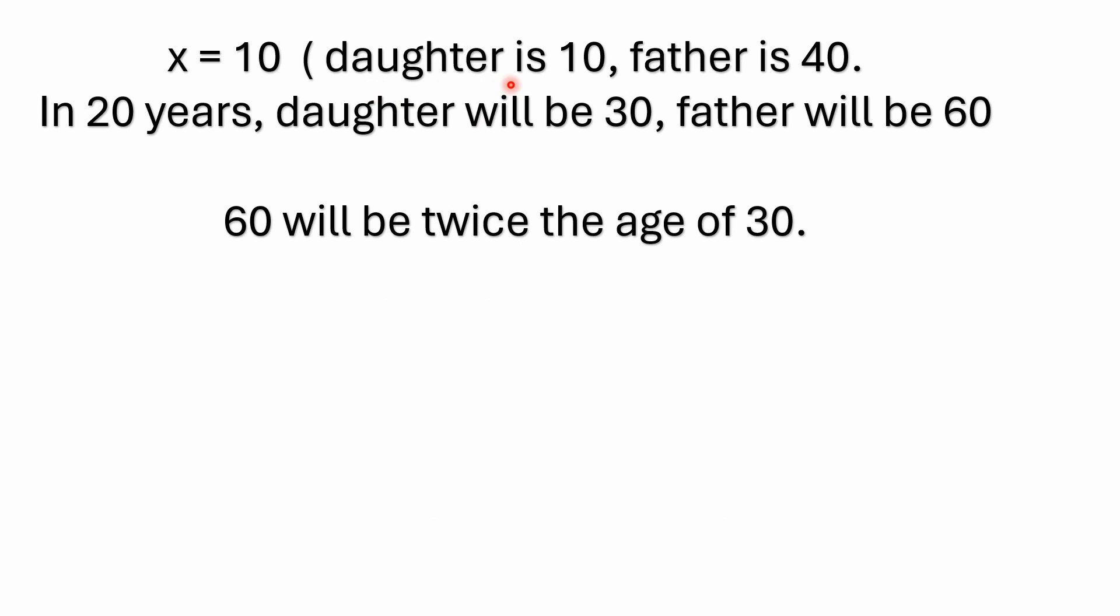So if X equals 10, the daughter's 10, the father would be 40. And why would that be? Because we said today the father's four times as old as his daughter.